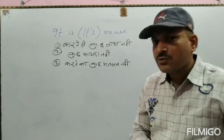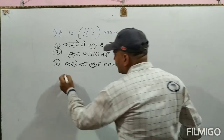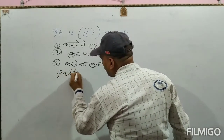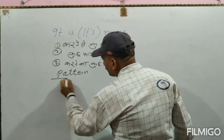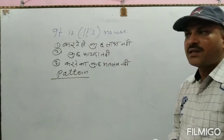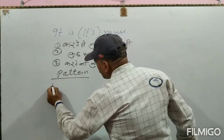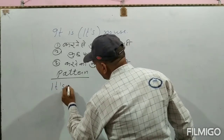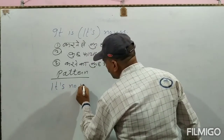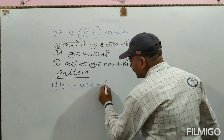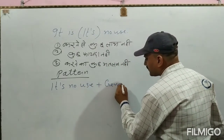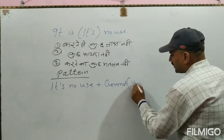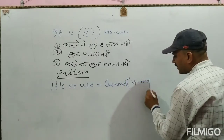इसका structure और pattern देखें। Pattern में क्या करेंगे — पूरा 'It's no use' लगा दें और फिर gerund लगा दें। Gerund का मतलब — क्रिया में 'ing' लगा दें।